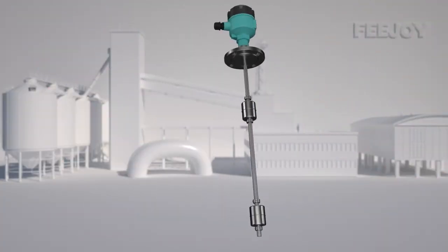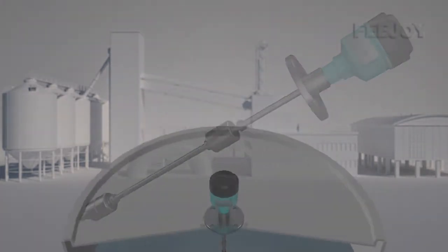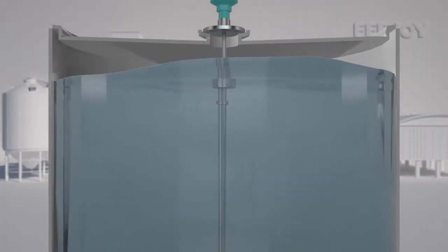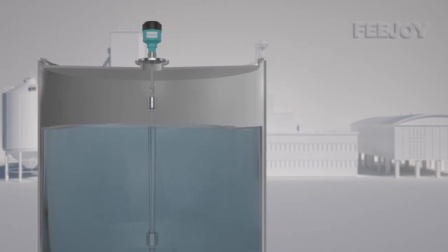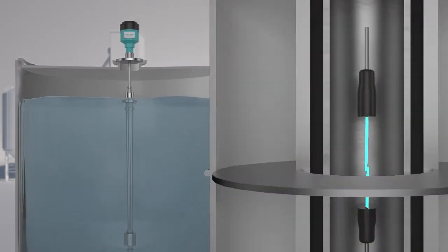When the measured medium interface rises or falls, the floating ball floats and drives the main body to move. At the same time, the magnet at the other end of the float will control the magnet on the switch level, according to your needs.